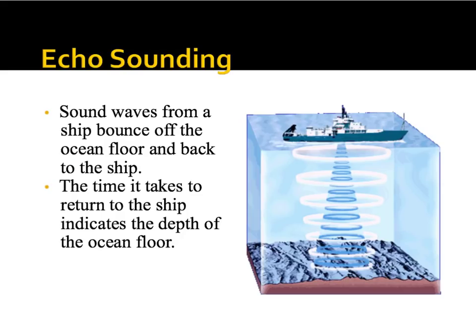One way we've figured out what the ocean floor looks like is echo sounding, which is similar to echolocation and sonar. Ships send a sound wave down to the bottom of the ocean, and it bounces off the ocean floor and back to the ship. The time it takes to return indicates the depth — if there's a mountain, the signal bounces back faster, maybe 4 seconds, versus 8 seconds to reach the full depth. The longer the time, the deeper it is.